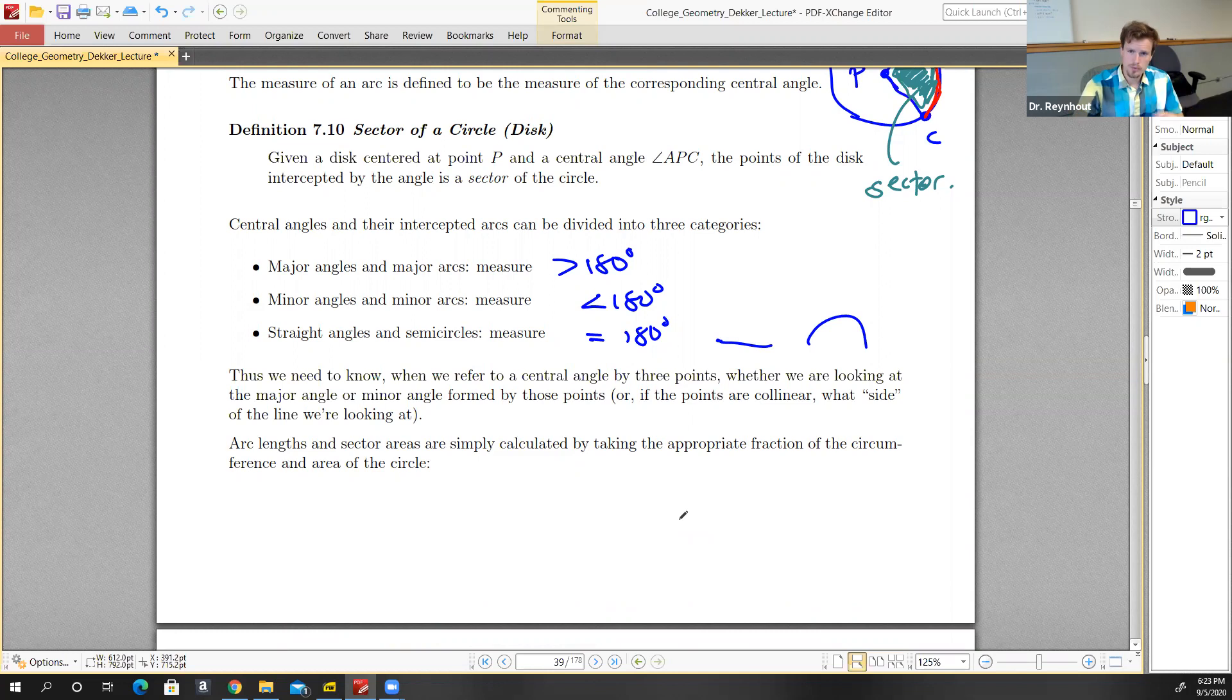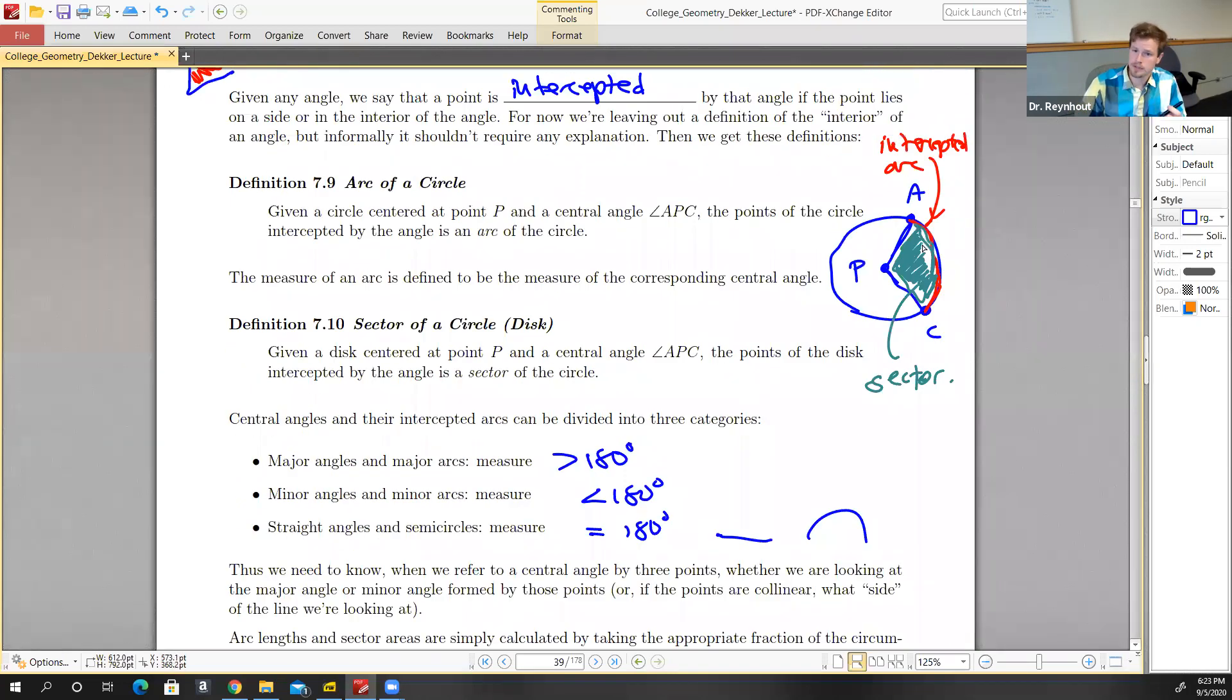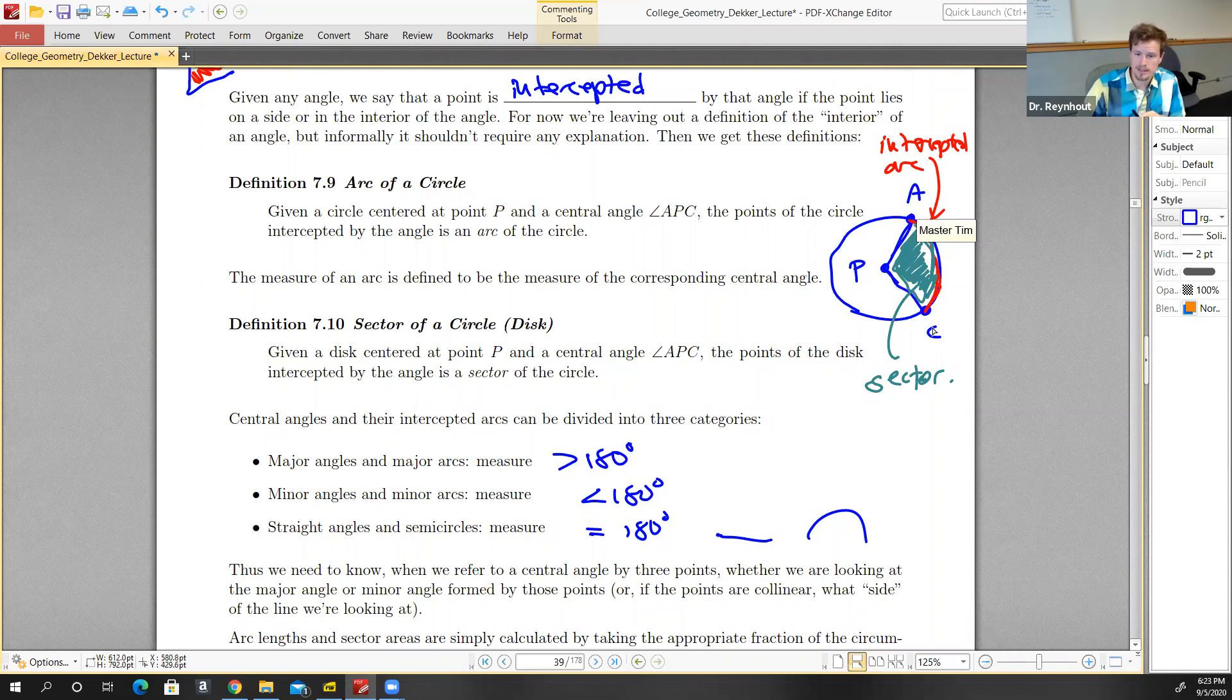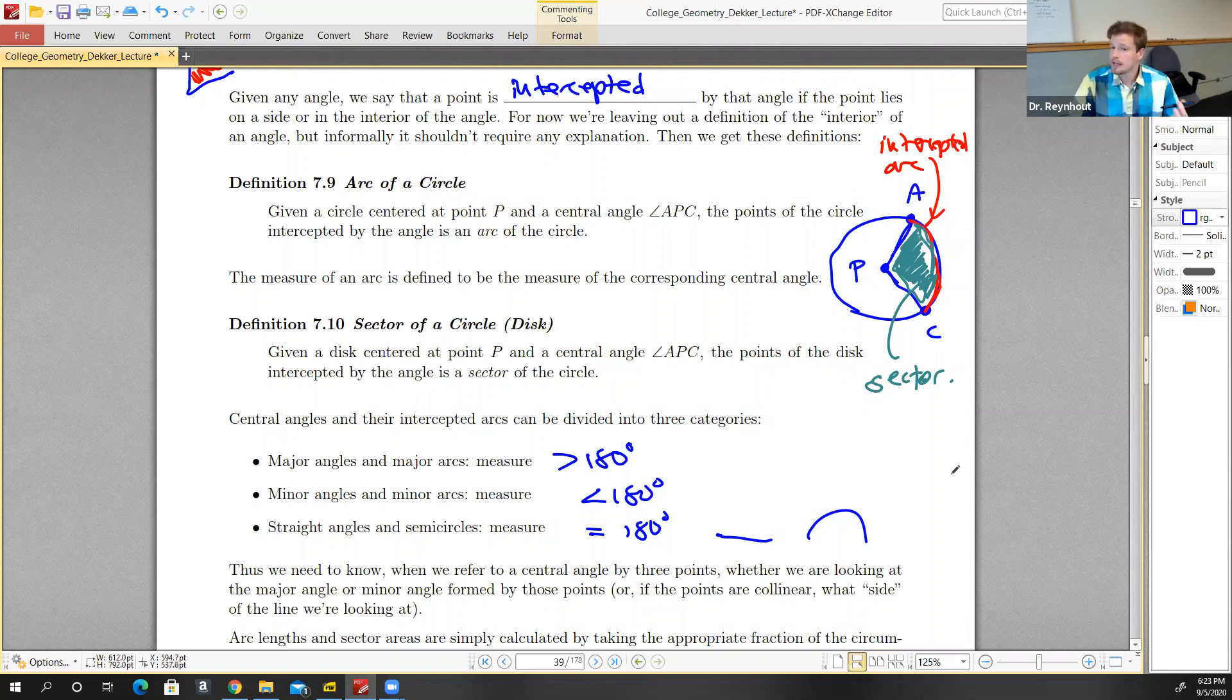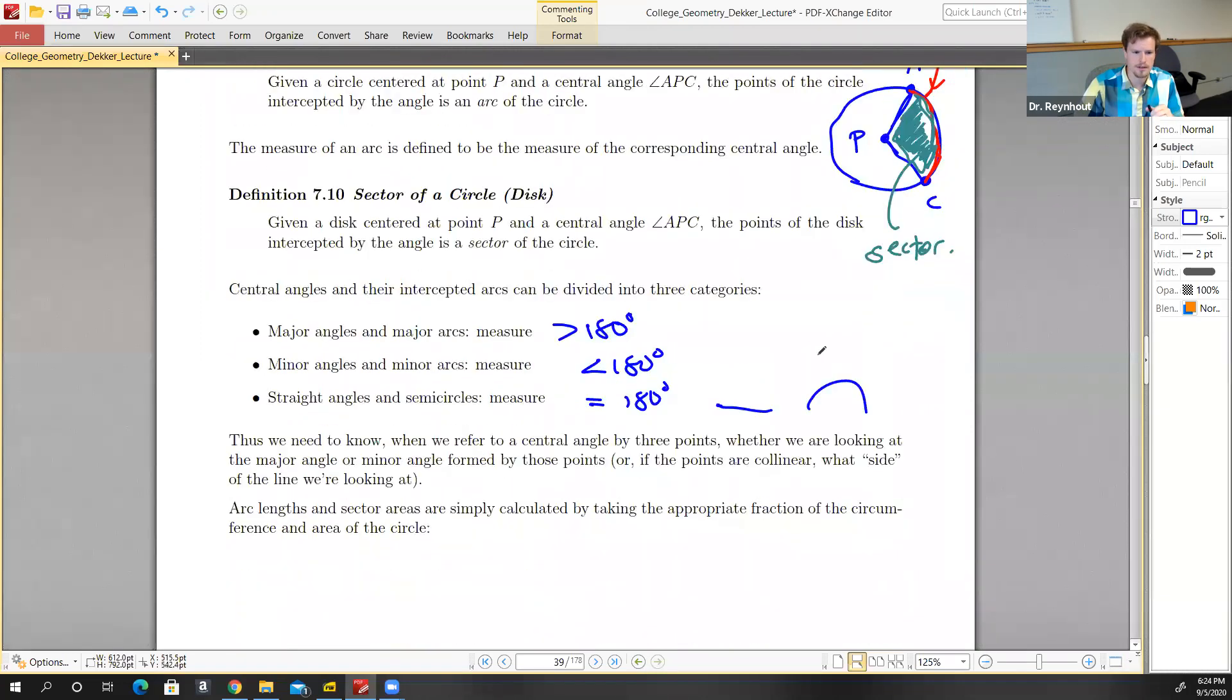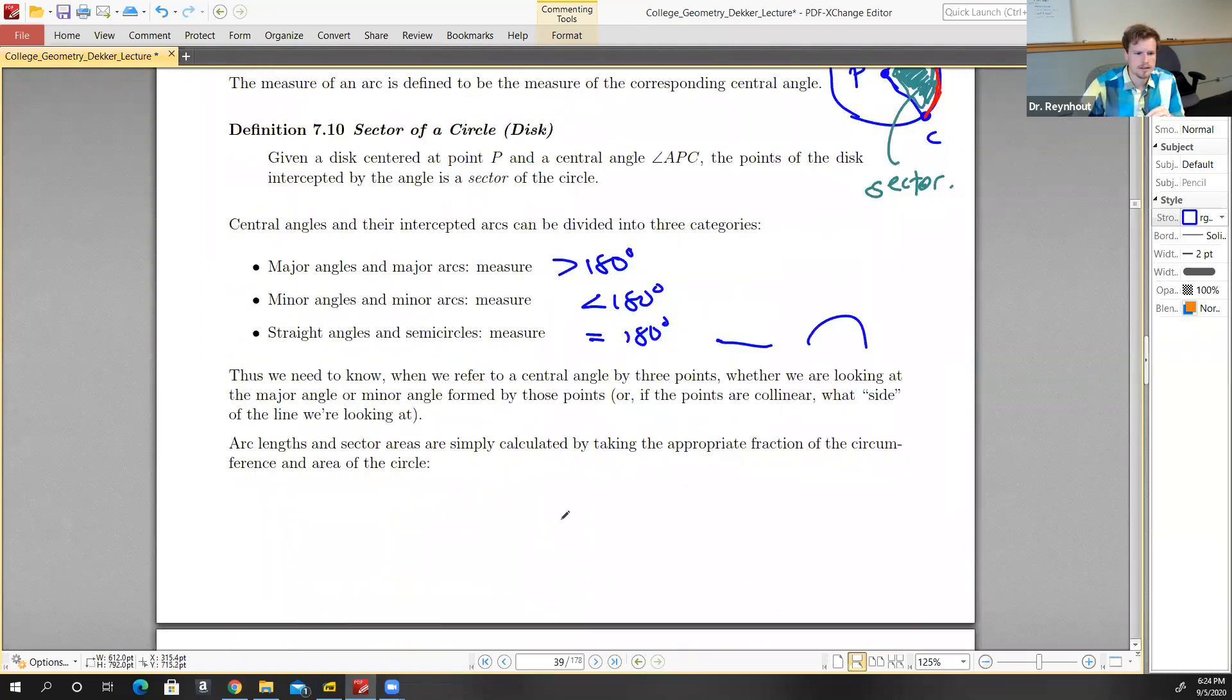When we're referring to central angle APC, we never actually specified whether we're referring to this portion or this portion. We could say the minor angle and we know we're talking about this side. If we said the major, then we know we're talking about this side.